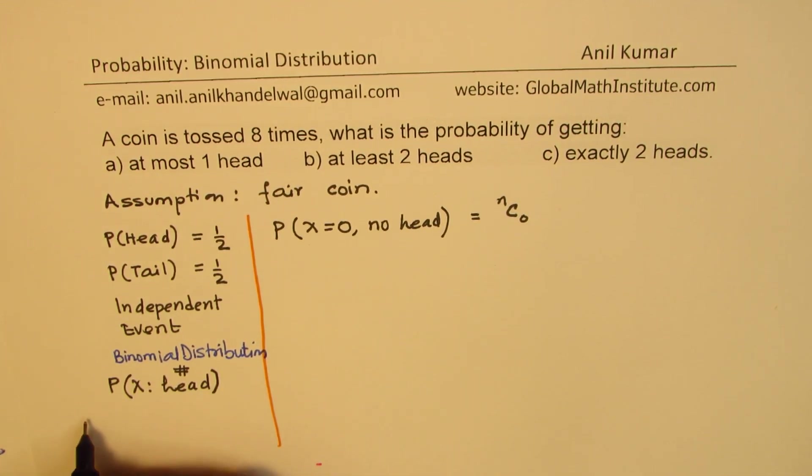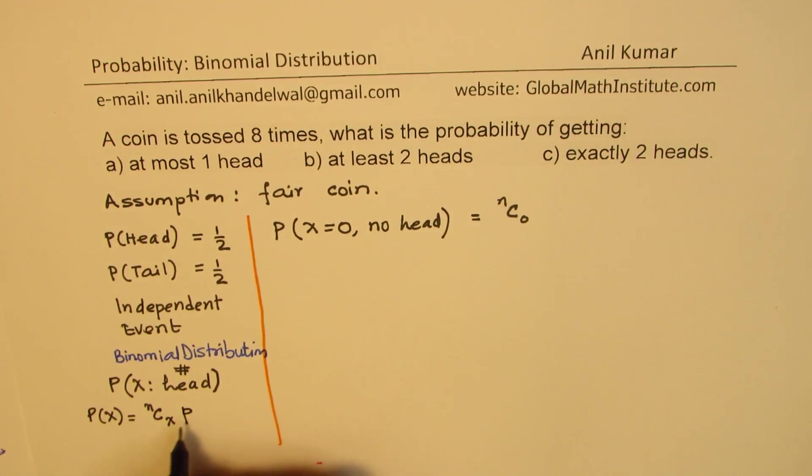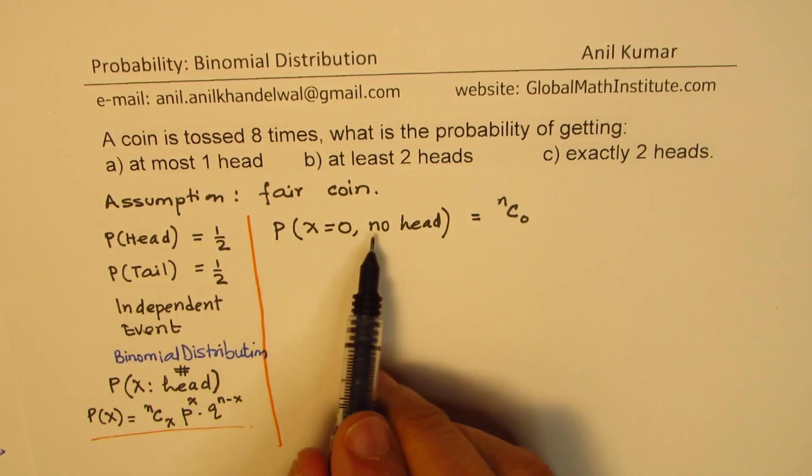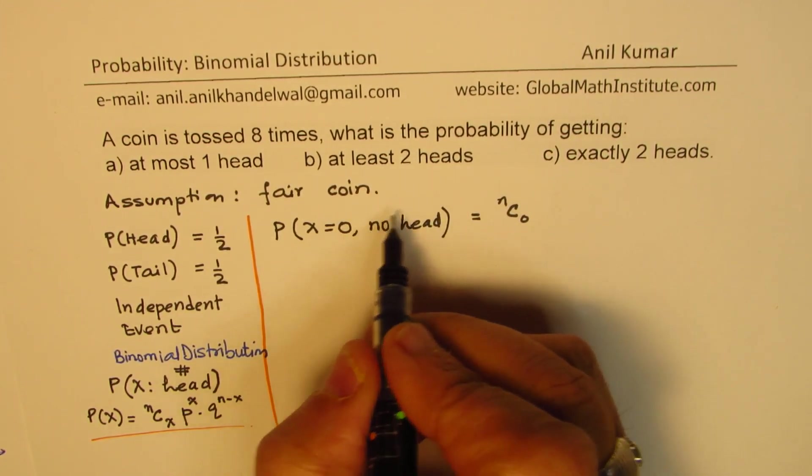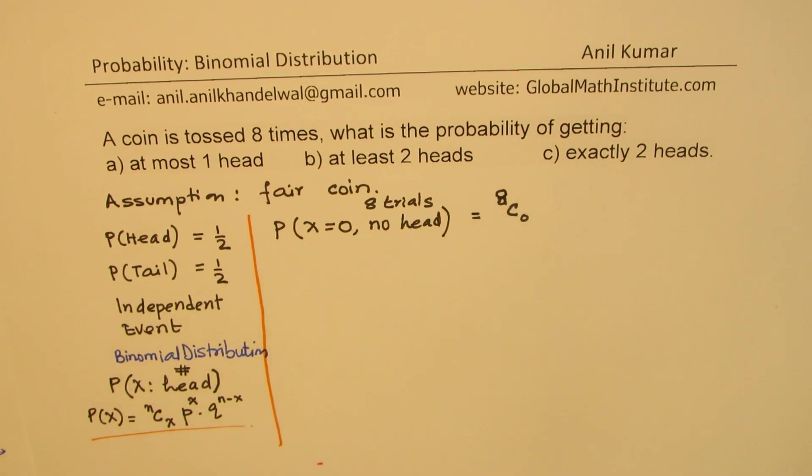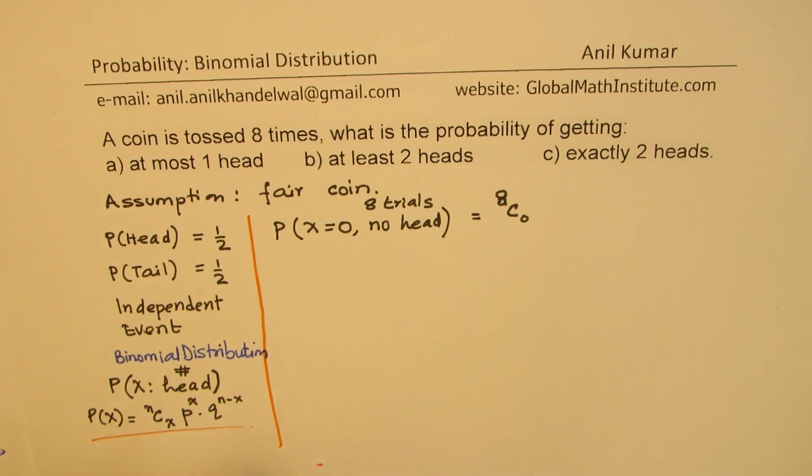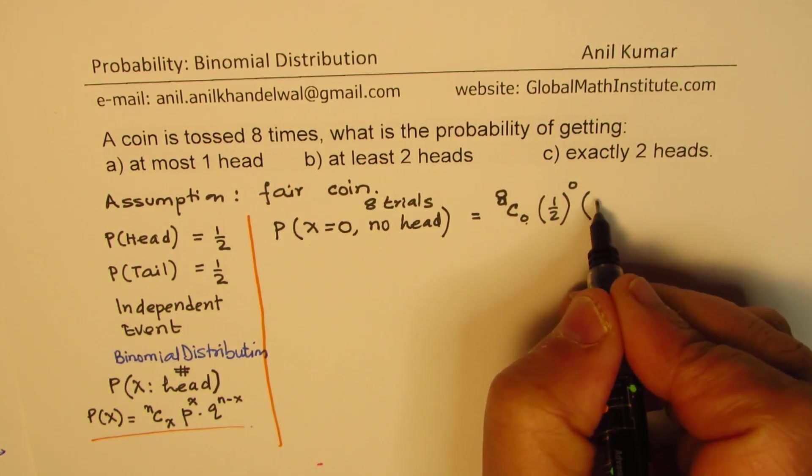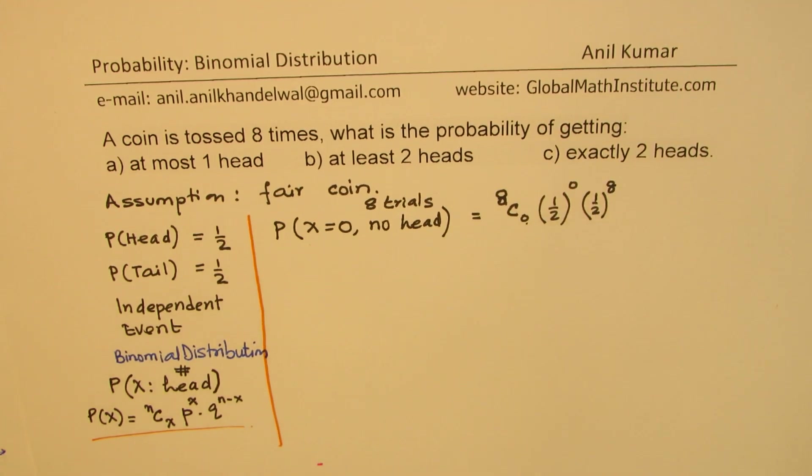So we could write this as nC0. Now, let me write the formula here. When we're talking about the probability, then the probability can be written as nCx times P to the power of X times Q to the power of n minus X. That will be the general formula, which will be used to solve this particular question. So when I'm saying no heads, and we have eight trials, so we'll make this as eight. So there are eight trials, no heads. Probability of getting head is half, and we get no head. And every time we get a failure, failure will be tail, and that will be eight times. So that is the probability of no heads.